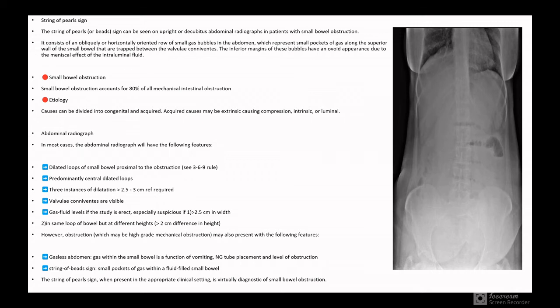Coming to the fifth and last pointer - the string of pearls sign. The string of pearls sign or beads can be seen on upright or decubitus abdominal radiographs in patients with small bowel obstruction. You can see the little image on your screen. It consists of an oblique or horizontally oriented row of small gas bubbles in the abdomen which represents small pockets of gas along the superior wall of the small bowel that are trapped between the valvulae conniventes. The inferior margin of the bubbles have an ovoid appearance due to the meniscal effect of the intraluminal fluid.